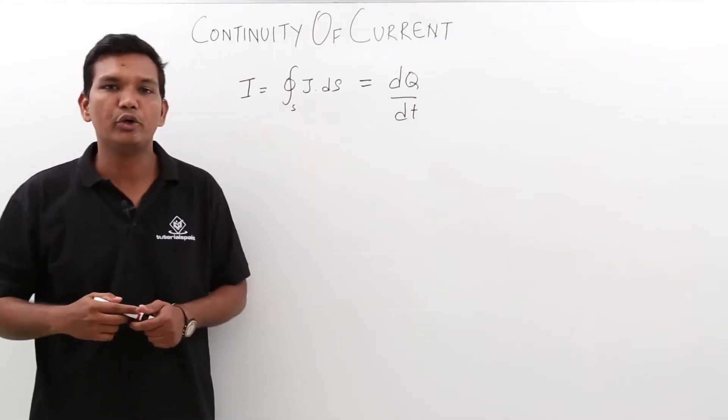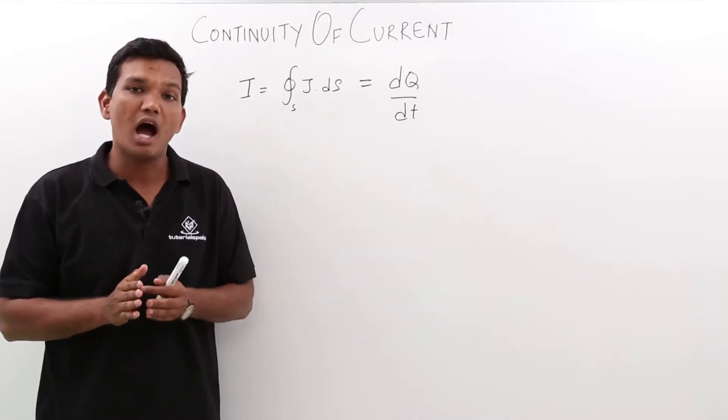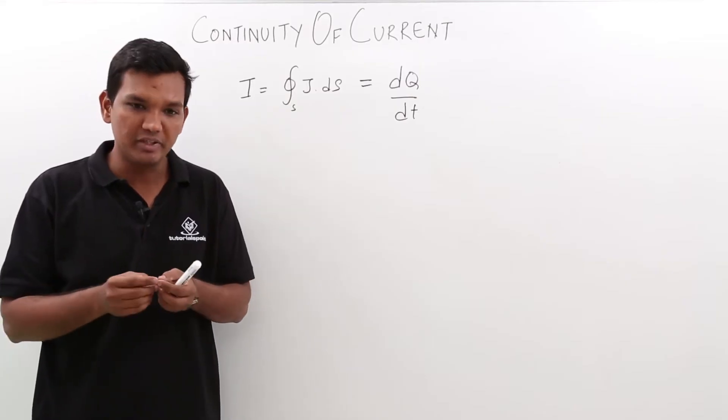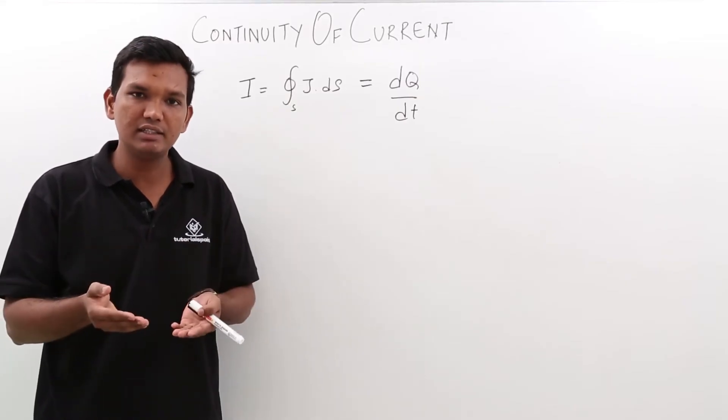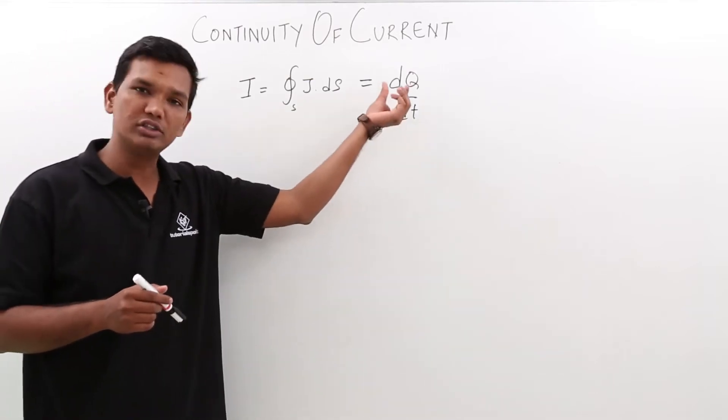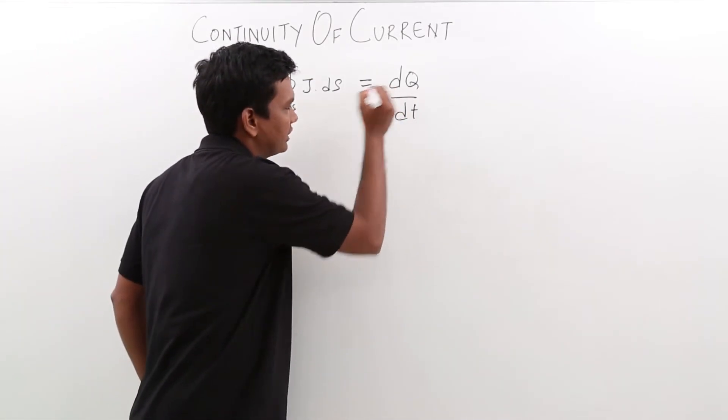As I said, current over a closed surface is the outward flow of charge, the outward flow of positive charge. It means the positive charge will decrease or the negative charge will increase. In that case, as the positive charge is decreasing, we are going to take a negative sign.